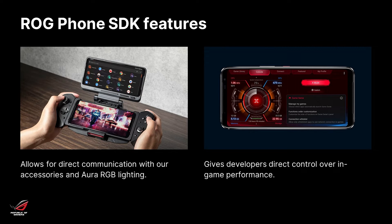So now that we've covered that, let's go on to the ROG Phone SDK itself and talk about its features. They can be divided up into two groups. First, we allow for direct communication with both our Kunai gamepad and our TwinView dock, as well as Aura RGB lighting. And we also give developers direct control over in-game performance, making it easier for you to hit those performance numbers that you're looking for.